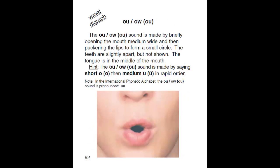O-U, O-W. Ow. The O-U, O-W sound is made by briefly opening the mouth medium-wide and then puckering the lips to form a small circle. The teeth are slightly apart but not shown. The tongue is in the middle of the mouth.